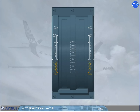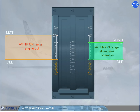Note that autothrust may be on in flight provided the thrust levers are set above idle to climb detent (all engines operating), or above idle to MCT (one engine inoperative). Beyond these detents, the pilot has manual control on the thrust.